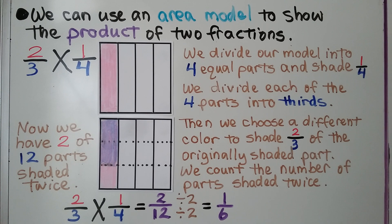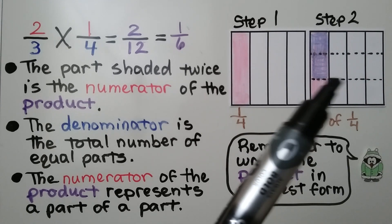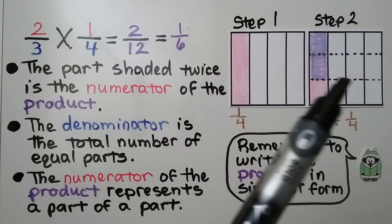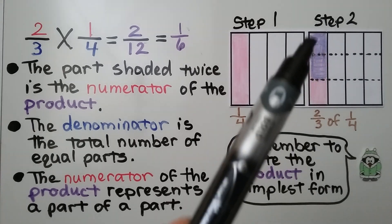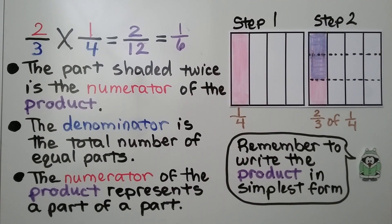We have two of twelve parts shaded twice — we count what's shaded twice. The part shaded twice is the numerator of the product. The model is now split into twelve parts, and two of them are shaded twice. That's our numerator: two.